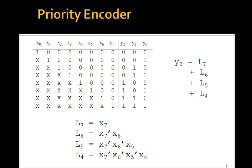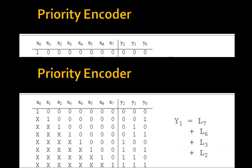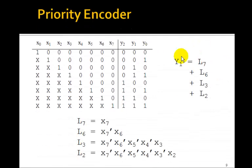So that would be the logic equation for y2. It would be a similar one for y1. Looking at these ones, you have an L7 or L6 or L3 or L2. L7 and L6 are the same as we had before. L3, for example, would be not x7 and not x6 and not x5 and not x4 and x3. And similarly for L2.